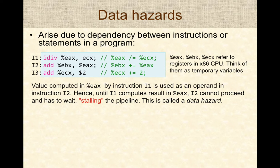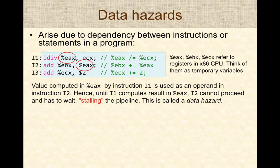Consider three example instructions. The first computes a result into register EAX. The second uses that value to update register EBX — creating an inherent dependency where instruction two cannot finish until instruction one finishes. In this case, instruction one is a division operation that takes more clock cycles to complete. So instruction two must wait or stall for instruction one, introducing stalls and delays in the pipeline.